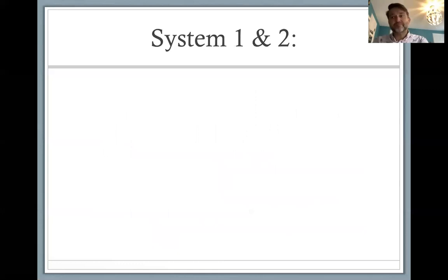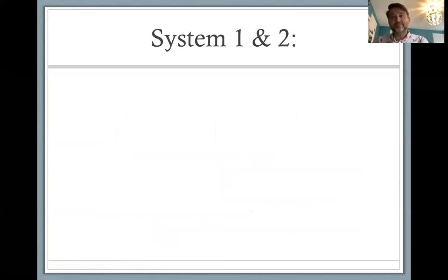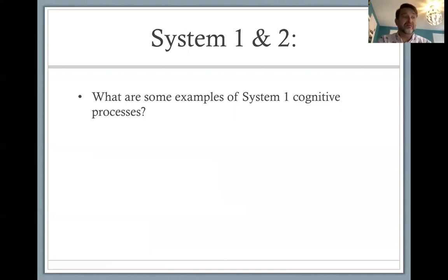Let's look at system one and two together. What I want you to do is think for a moment: what are some examples of system one cognitive processes, and what are some examples of system two cognitive processes? You can pause the video and then we'll continue.